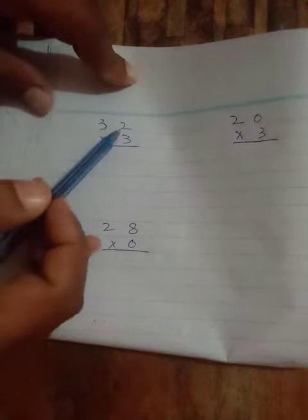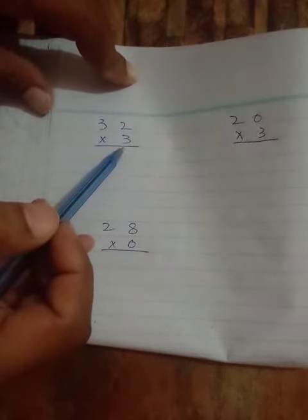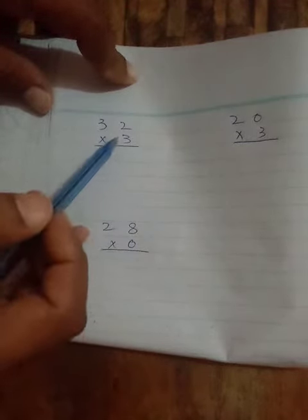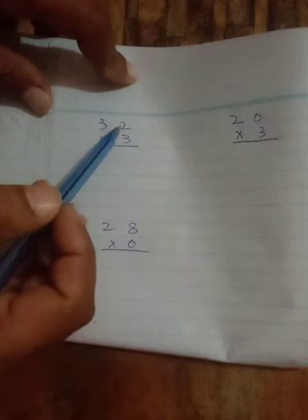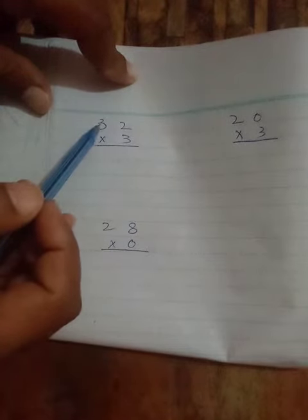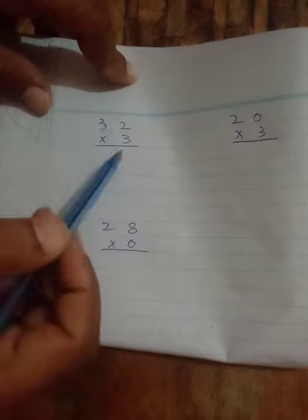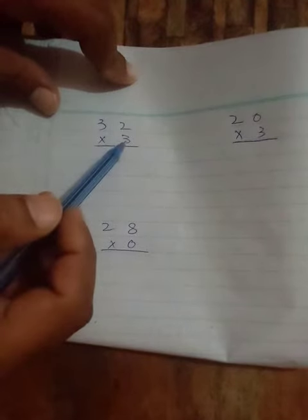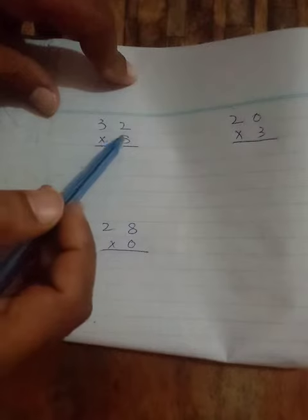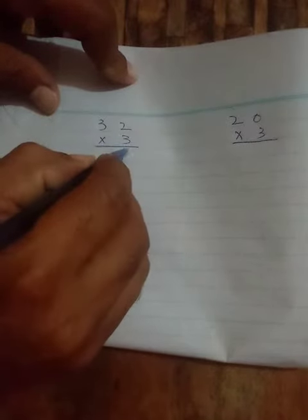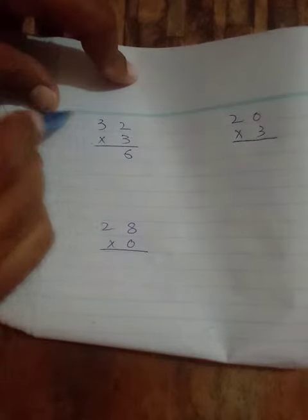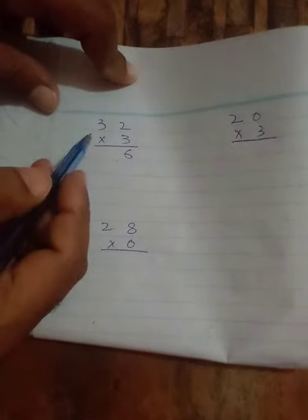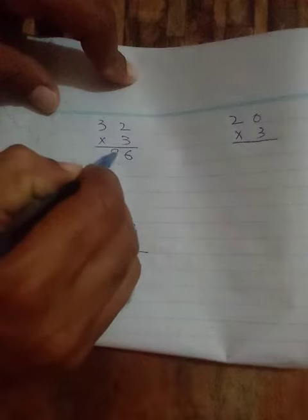We are going to solve 32 multiplied by 3. This means you use the 3 table. First, 3 times 2 equals 6, so we write 6. Then, 3 times 3 equals 9, so we write 9. The answer is 96.